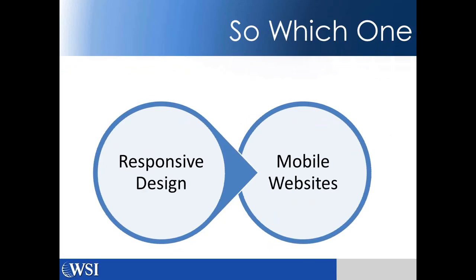The two main options are either a responsive website or a mobile website. A responsive website is essentially rebuilding your entire website in a way that regardless of the screen size someone accesses it on — desktop, laptop, tablet, or mobile device — the screen, content, and images will all automatically adjust so it fits nicely. It's only one content management system, so you're dealing with one website, one CMS, which allows you to control your entire website regardless of the platform.